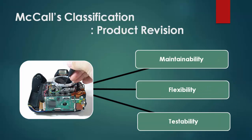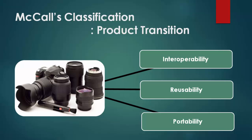The next category, product revision, measures the system's ability to change. These include maintainability, flexibility, and testability. These are the qualities that current and future developers would perceive as beneficial — users would not care about them much, but developers would find them very valuable.